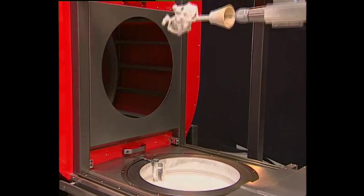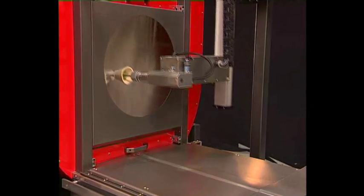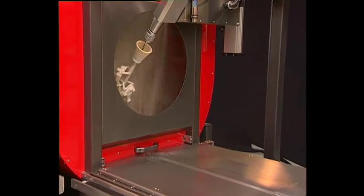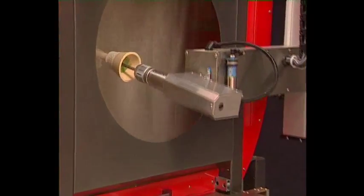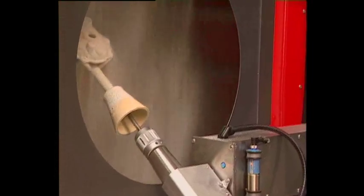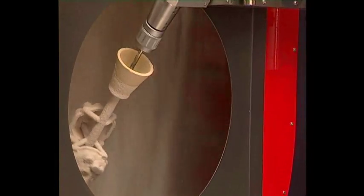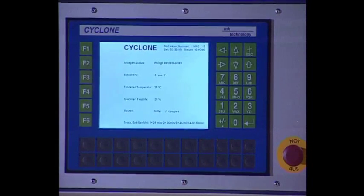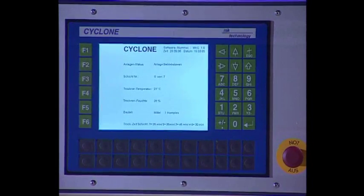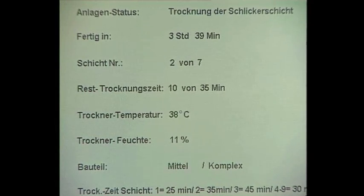Depending on the size of the part, six to eight layers are necessary to achieve a wall thickness of about six millimeters. The clearly structured display gives constant information on the actual process status, the remaining drying time of the respective layer, and the total time required to finish the part.